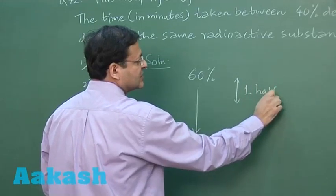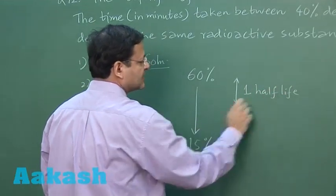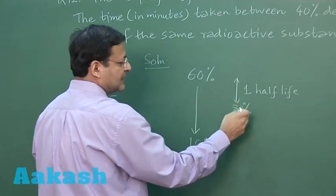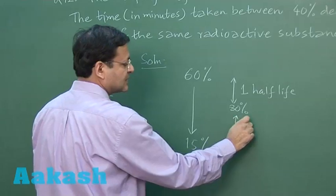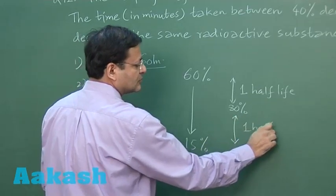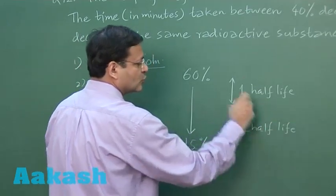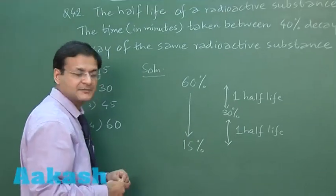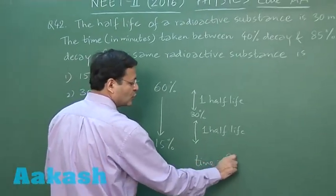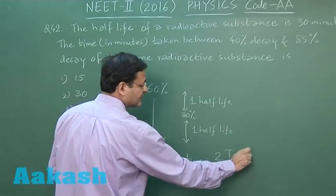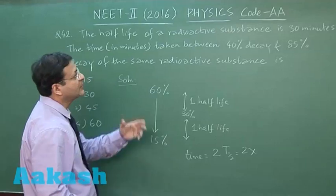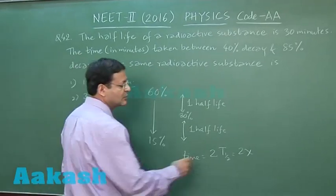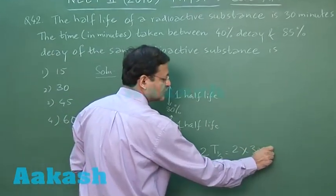So in total this question wants you to calculate the value of two half-lives. Time will be two half-lives, which is 2 times the half-life. 2 into what is the half-life? 30 minutes. So 2 into 30 minutes, in total 60 minutes.